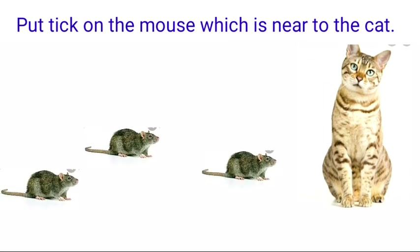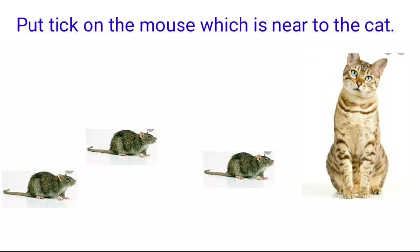Now we will solve some questions. Put a tick on the mouse which is near to the cat. Look children, there are some rats and a cat. Now tell me, which mouse is near to the cat? This rat is near to the cat.